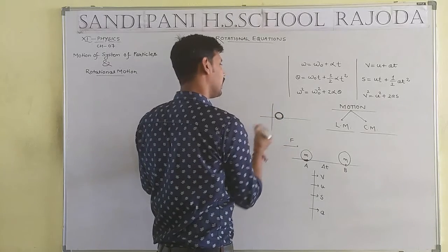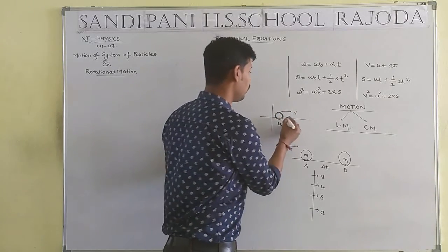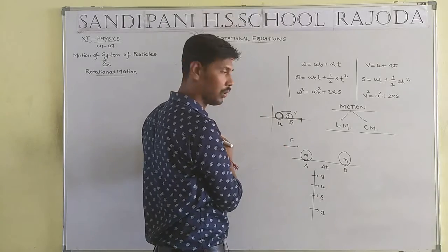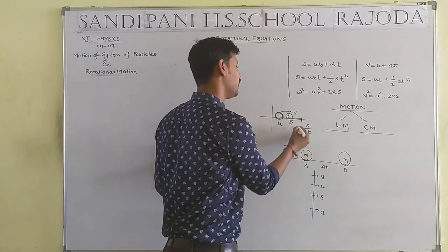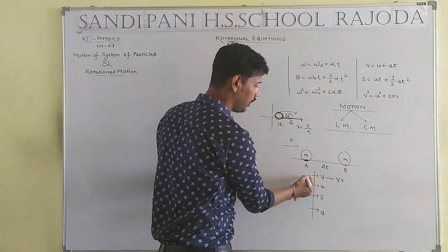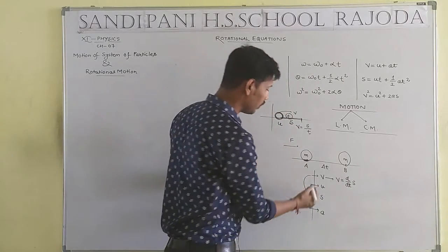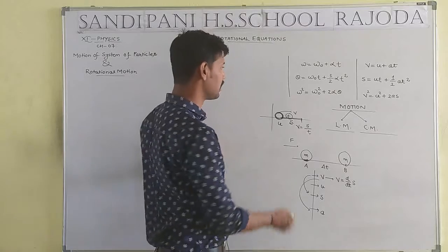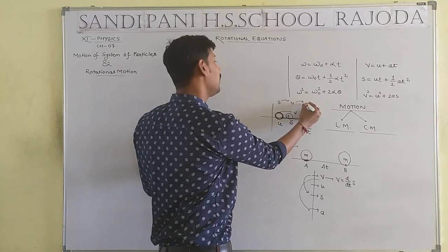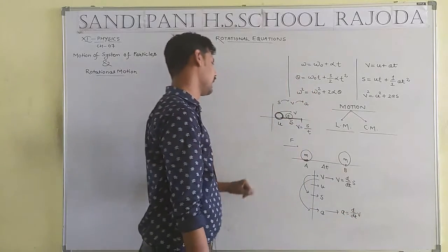When any object starts moving, it begins with initial velocity u and reaches final velocity v, covering displacement S in some time. The rate of change in displacement is known as velocity. From velocity, we develop acceleration. The rate of change in velocity is known as acceleration.